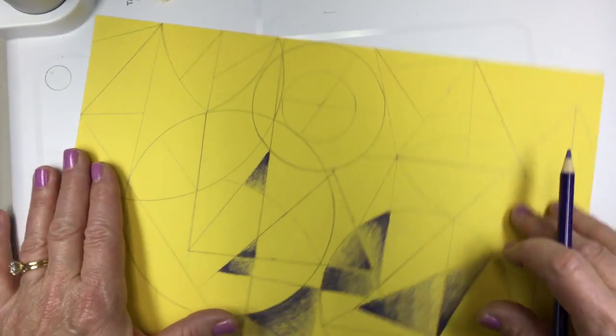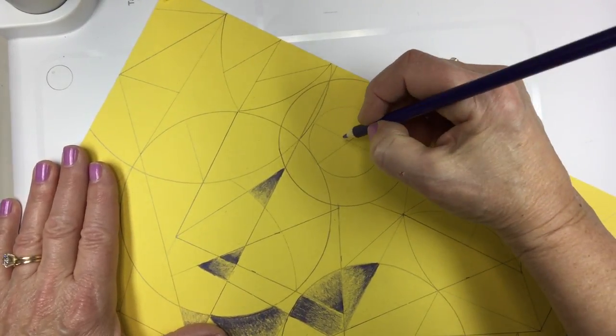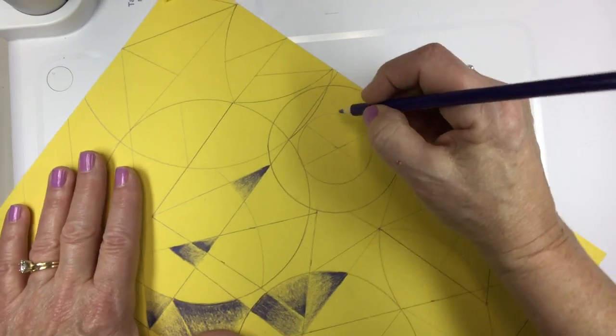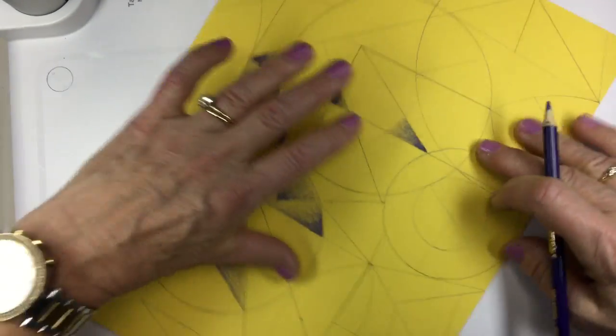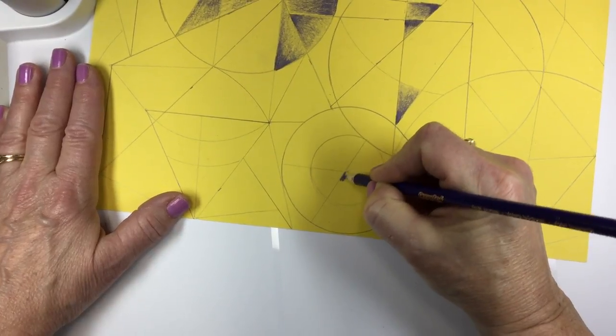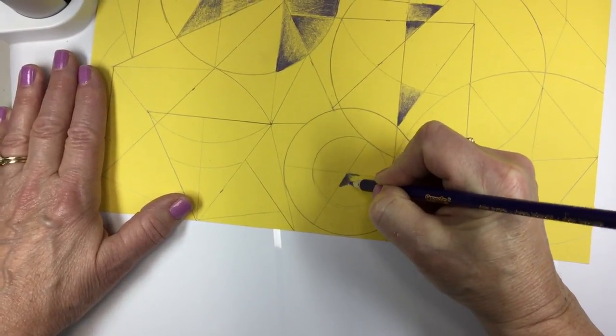So just begin by selecting an area that you would like to start with. I'm going to start with this part of a circle right here, and I'm going to work dark to light. You should always have dark, medium, and light shading in each one of these areas.